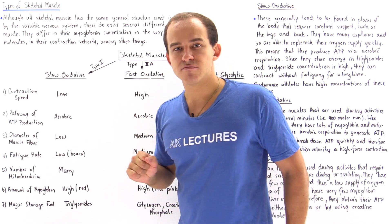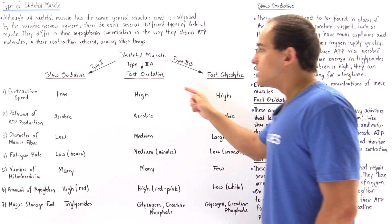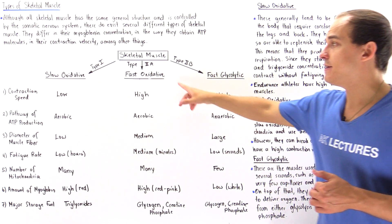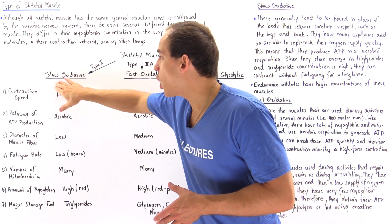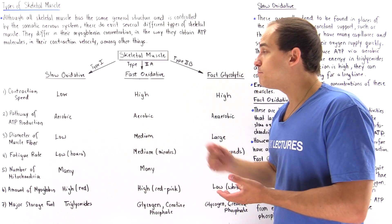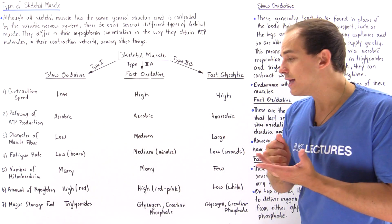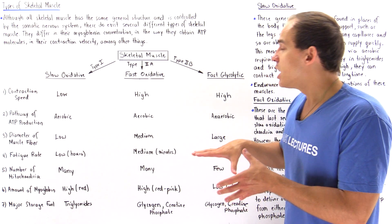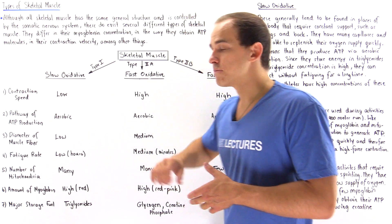Type 2A muscles are known as fast oxidative or fast twitch muscles. Fast simply means the breakdown of ATP is quick, so we break down ATP very quickly, and that means the muscle contraction speed is high. Just like slow oxidative, fast oxidative also uses aerobic respiration, contains a high supply of oxygen, and also contains a lot of myoglobin. So these muscles also appear red, but they can also appear pink, meaning the amount of myoglobin is lower in fast oxidative than in slow oxidative.